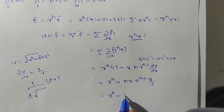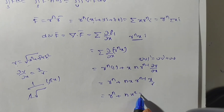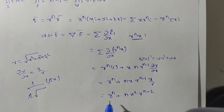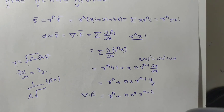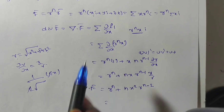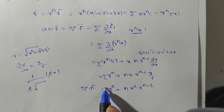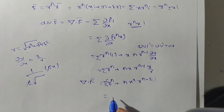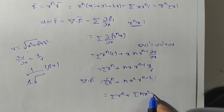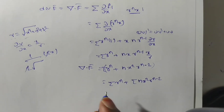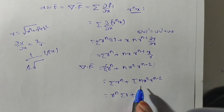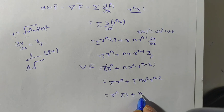Substituting ∂r/∂x = x/r, we get r^n + n · x² · r^(n-1) / r = r^n + n · x² · r^(n-2). This is the del · f̄ value for each component. Now taking the summation and splitting: summation of r^n plus summation of n · x² · r^(n-2). Since r^n is constant, it comes outside giving r^n · Σ1.